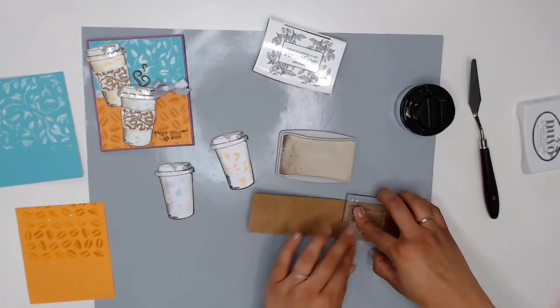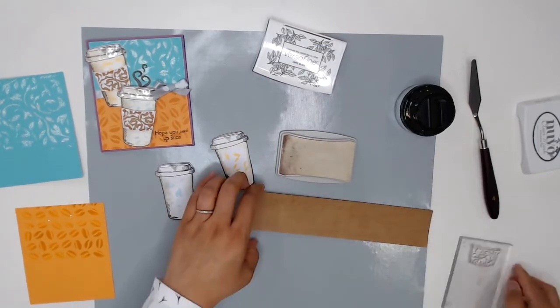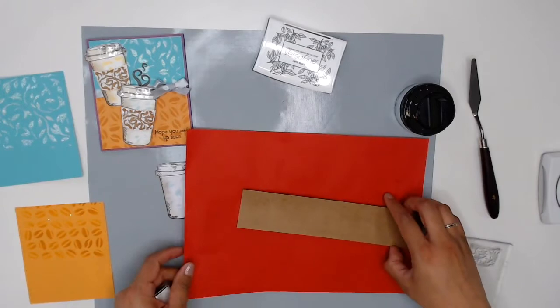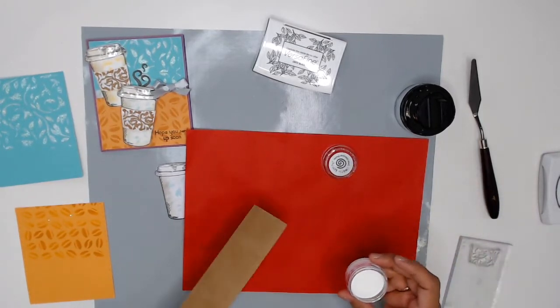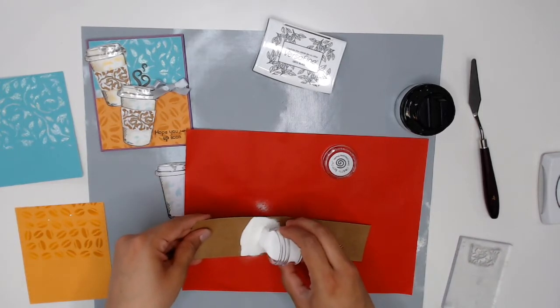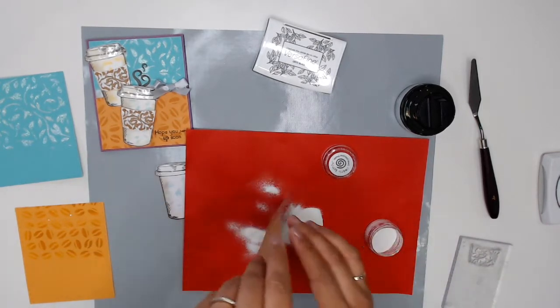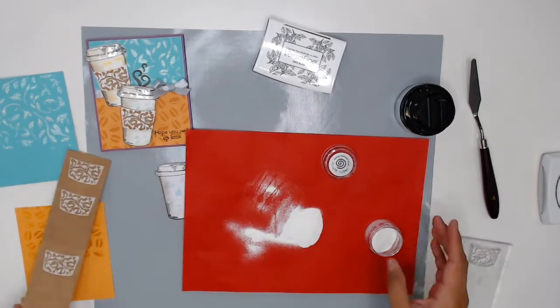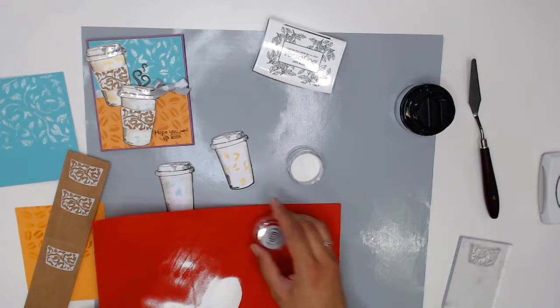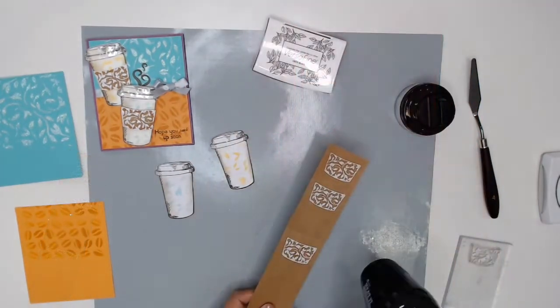Now I'm going to grab a scrap piece of paper and my white embossing powder and this embossing powder is from Cosmic Shimmer so creative expressions in true white. Shake off the excess and we have a nice pattern for our coffee cup holder. Now I'm going to melt my embossing powder with my heat tool.